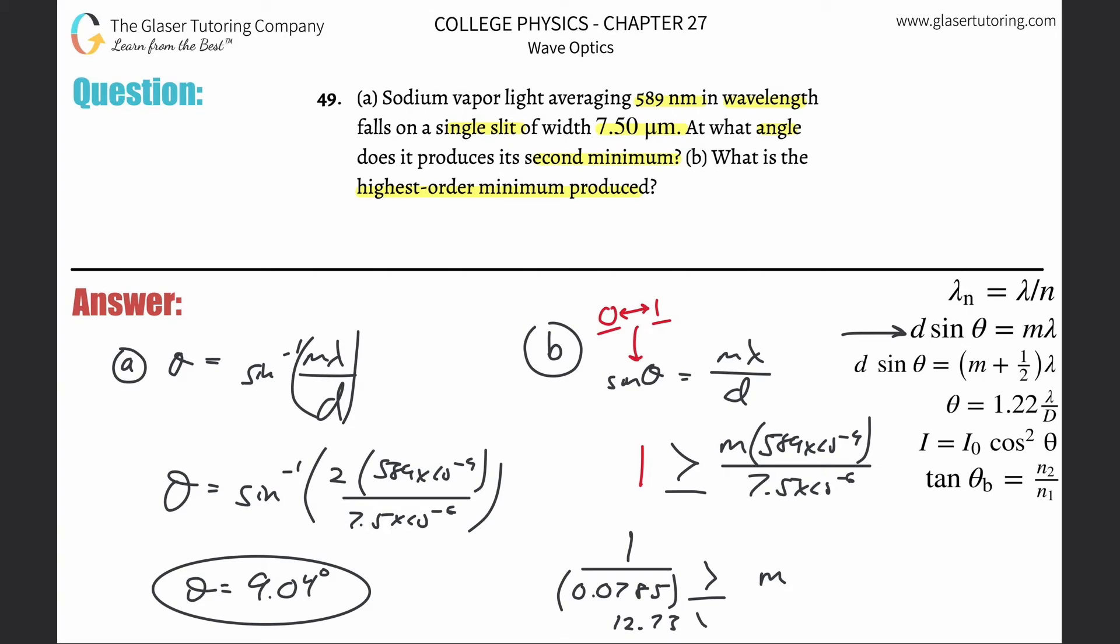This gives 12.73 greater than or equal to m, or if I flip this around, m is less than or equal to 12.73. That's cool, but m cannot be a decimal - it has to be an integer. Therefore, the closest integer that is less than 12.73 would be 12. So that is the highest order minimum that can be produced.